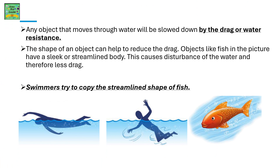Any object that moves through water will be slowed down by the drag or water resistance. The shape of an object can help reduce the drag. Objects like fish have a sleek or streamlined body. This causes less disturbance of the water and therefore less drag. Swimmers try to copy the streamlined shape of the fish, because of which the effect of drag is reduced.